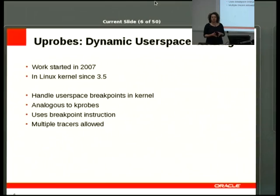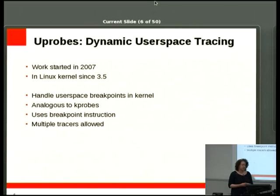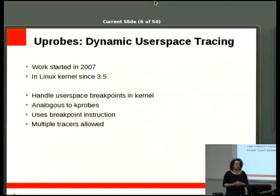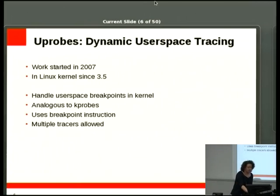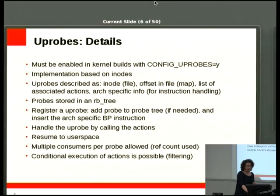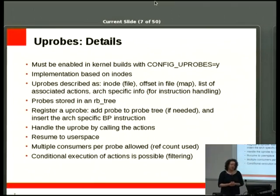The other construct is uprobes, which allows tracing of user space applications. This was one of the latest things added — around 2007, building on kprobes from 2005. It allows you to probe user space apps using breakpoints handled inside the kernel. The mechanism is similar to kprobes: insert a breakpoint instruction, catch the exception, do whatever you need. You're also allowed to have different tracers on the same point — multiple consumers.